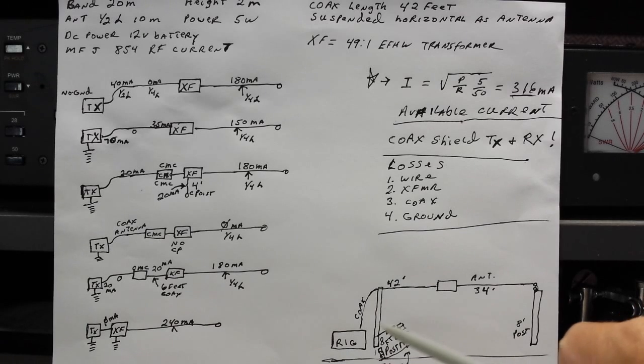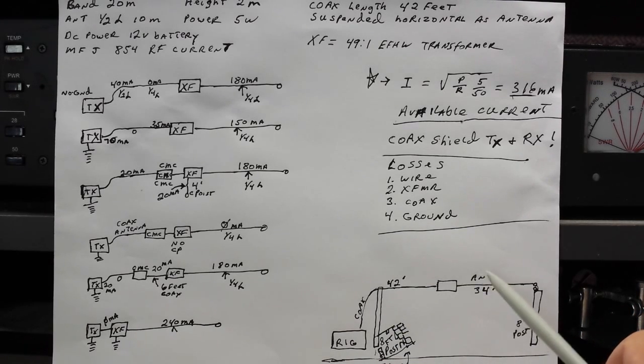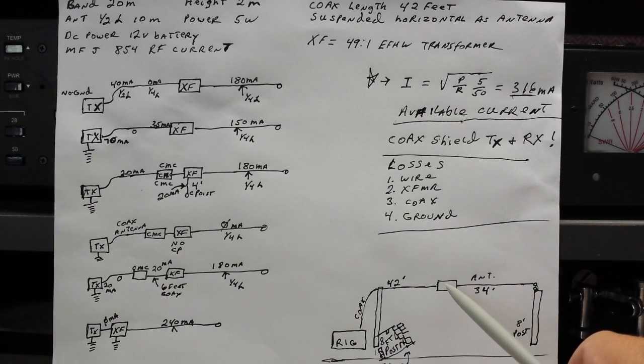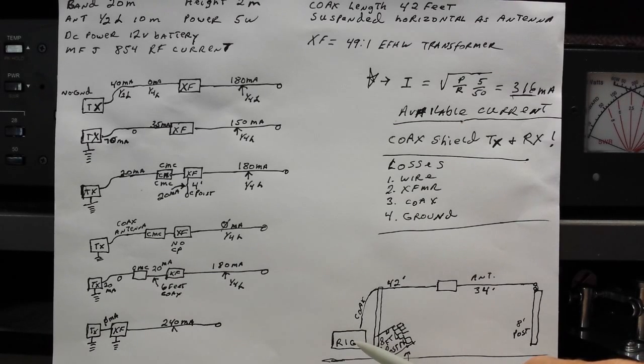The antenna was supported by two eight-foot posts. This is your antenna. It's 34 feet long. It's a half wavelength on the 20 meter band. This is your NFED half-wave transformer 49 to 1 ratio and this is your coax going down to your rig. The rig was sitting on a wooden table being powered by a battery and initially there were no grounds. It was simply floating above ground.